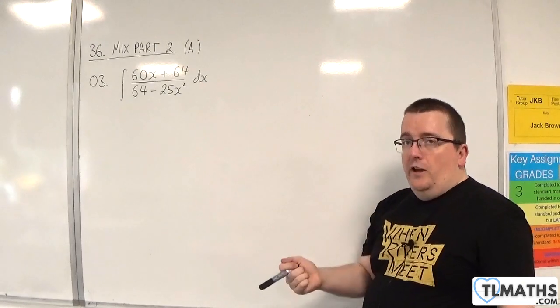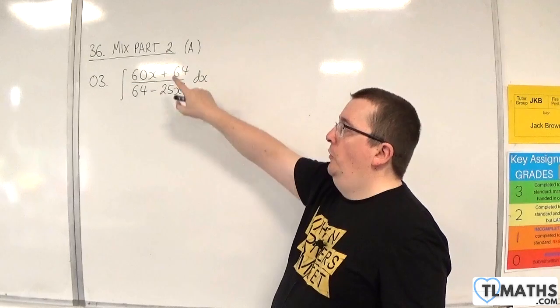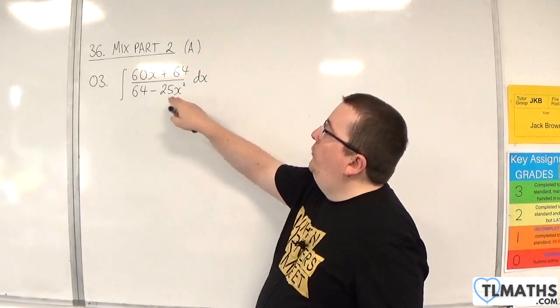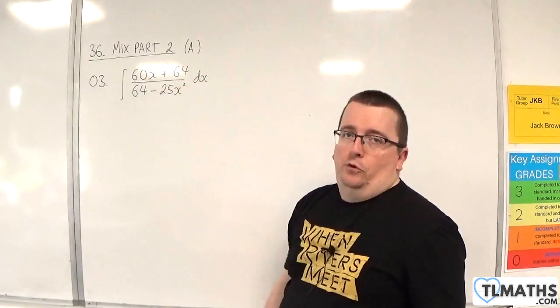Now, the first thing to note is that the denominator does not differentiate to a multiple of the numerator. Because we're going to get minus 50x, and we've got 60x, and we've got this rogue 64 there.